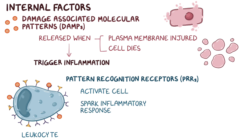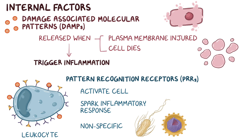PRRs are cell surface receptors on various leukocytes that help activate those cells and spark the inflammatory response, which can be thought of as the innate immune system. Key features are that this response is nonspecific, meaning PRRs don't distinguish one specific pathogen from another, although they can distinguish between broad categories like viruses from bacteria. Also, their response is very fast, occurring within minutes to hours, and finally there's no memory associated with innate responses.